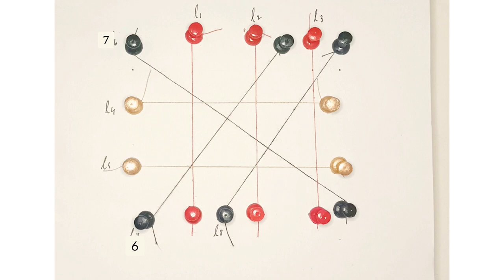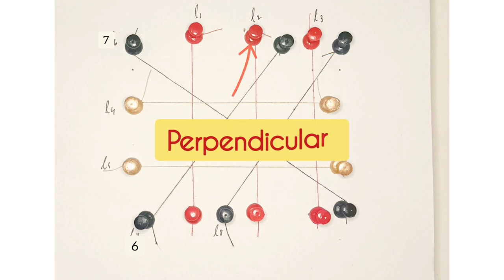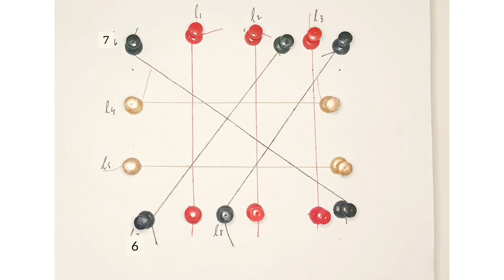Observations: L1, L2, and L3 are perpendicular to L4 and L5. L7 is perpendicular to L8 as well as L7 is perpendicular to L6. L4 is parallel to L5.